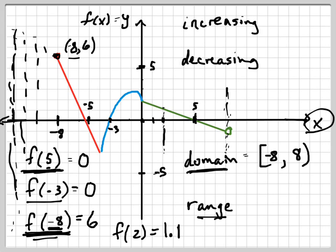Is it like when the circle is closed, it's a bracket, and when the circle is open, it's a parenthesis? When the circle is closed, it's a closed bracket. When the circle is open, it's a parenthesis, because it means that it does not touch. Parenthesis means that it does not touch it. This is called an open bracket; that one is called a closed bracket.